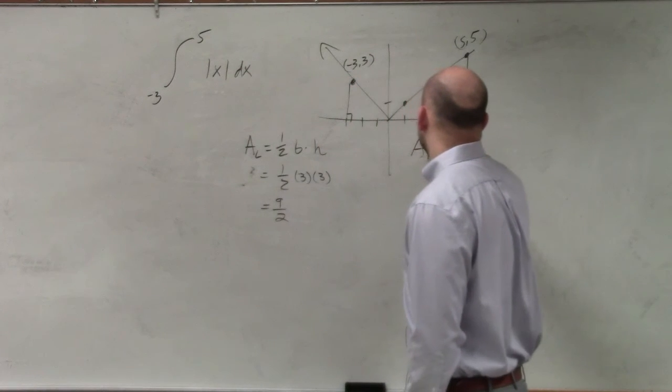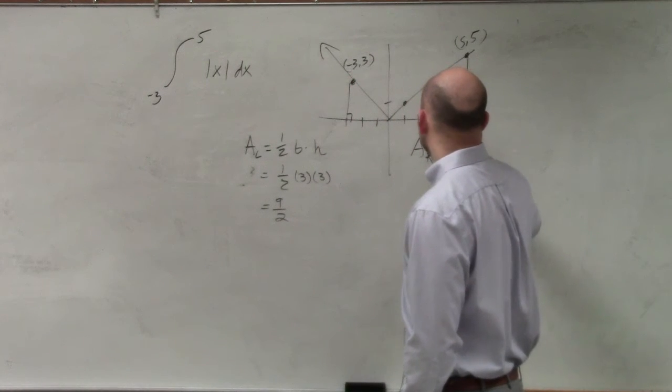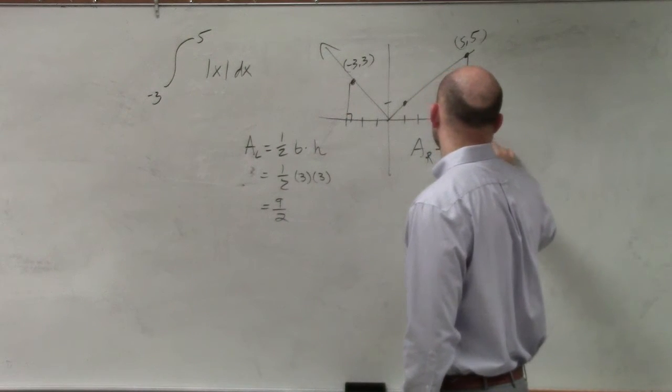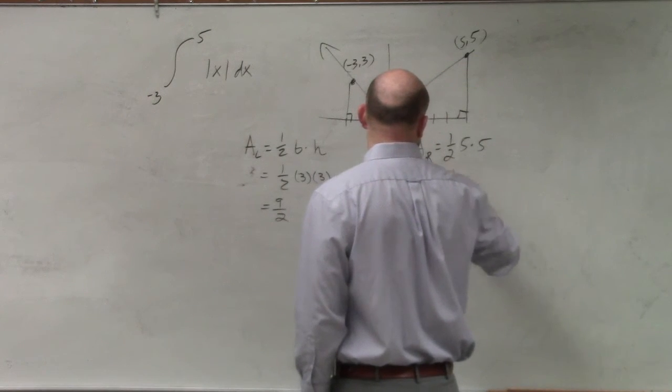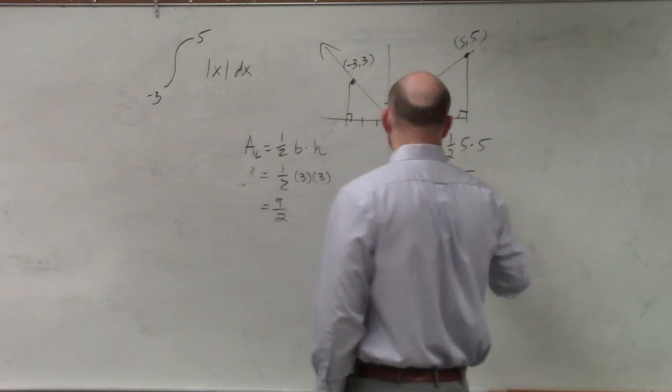And then the area of my right triangle is going to be one-half times five times five, which is going to be 25-halves.